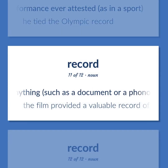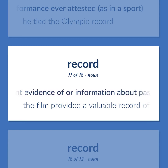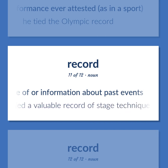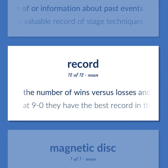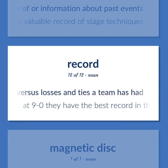Anything — such as a document, a phonograph record, or a photograph — providing permanent evidence of or information about past events. Example: The film provided a valuable record of stage techniques. Also, the number of wins versus losses and ties a team has had. Example: At 9–0, they have the best record in their league.